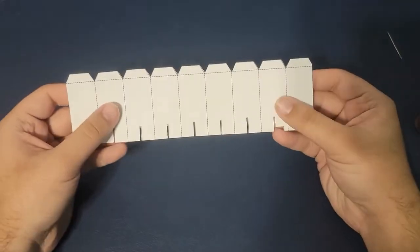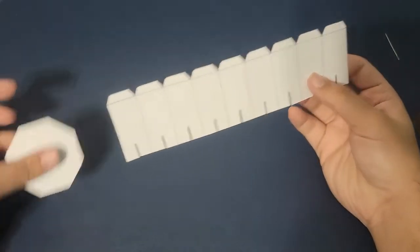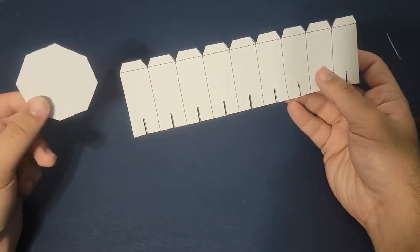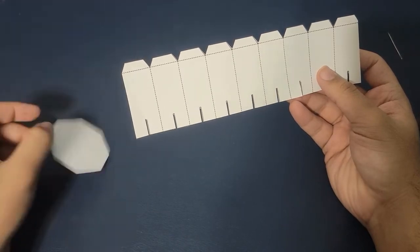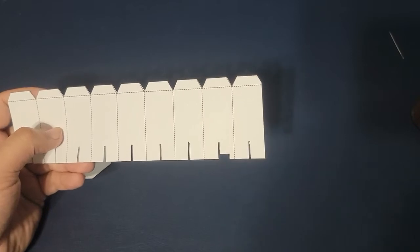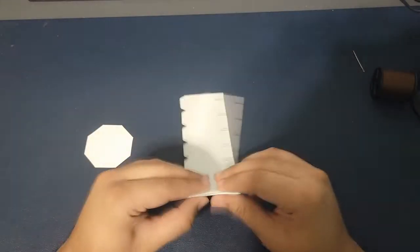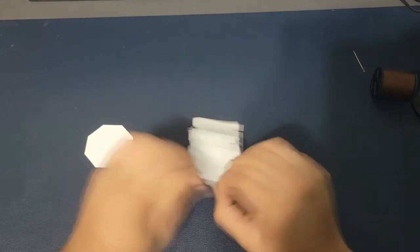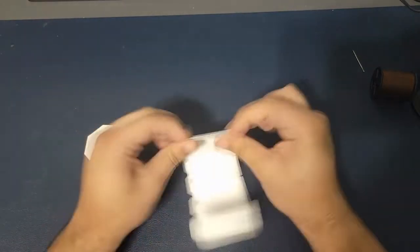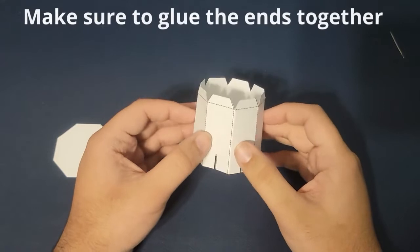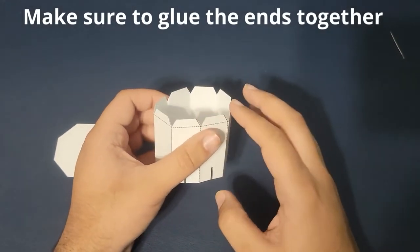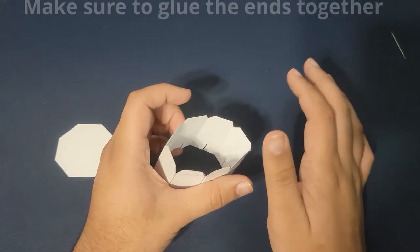Alright, so now we're going to work on the body. You want to have this and then one of the little octagons that we cut out earlier. You're going to fold along the lines. Now that you have this, you're going to fold each of these tabs inward so that it becomes flat on top.